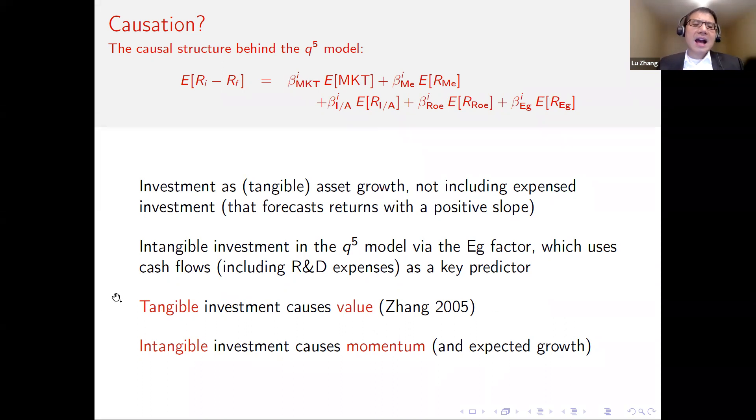In terms of the causal structure, in my prior work, I have shown that tangible investment seems to be causing the value premium. In ongoing work, we are trying to show that intangible investment causes momentum as well as our expected growth factor. And that could be potentially risky, think about the rival vaccine developers. They have lost out completely to Pfizer, Moderna, and Johnson & Johnson, at least in terms of market share in the U.S. So expected growth may not pay out. It's only a growth potential. The growth potential may not pay out at the end of the day. So in that sense, expected growth could potentially be risky.